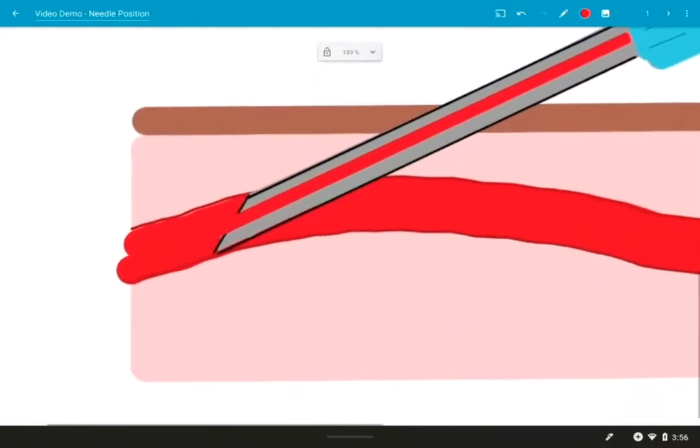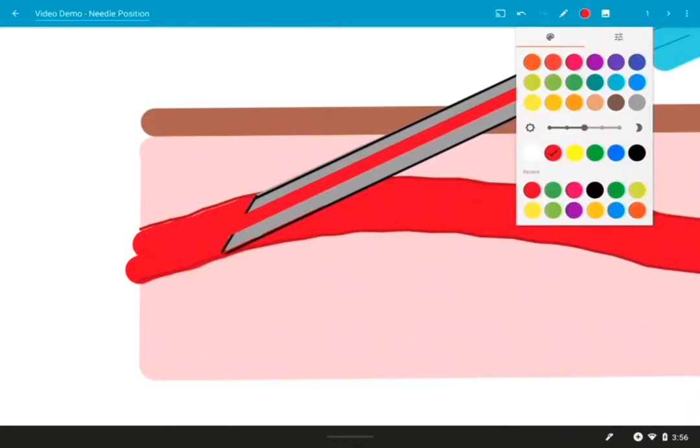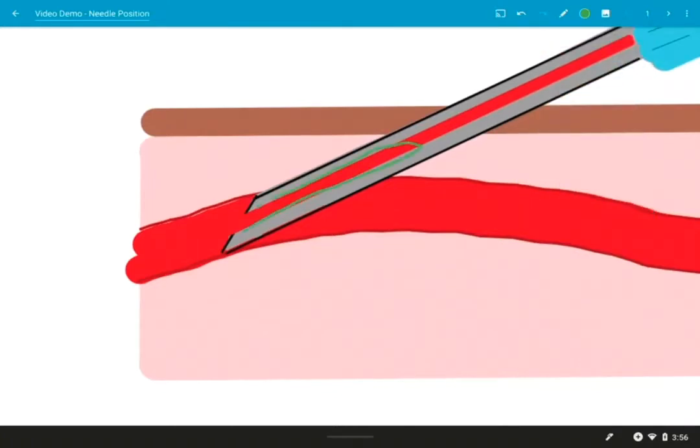So first of all, let's focus on this bevel here. The bevel is the opening to the needle, and the inside of the needle is called the lumen. You want that bevel facing upwards. You don't want to insert your needle the opposite way, so with the bevel facing downwards. This way you have the sharpest part of the needle, that point right there, entering the skin and entering the vessel and creating the least amount of tissue damage possible.